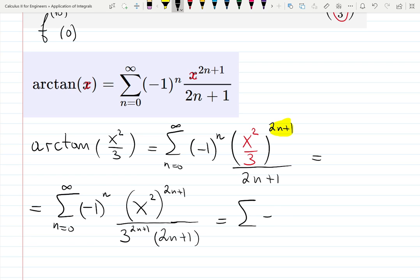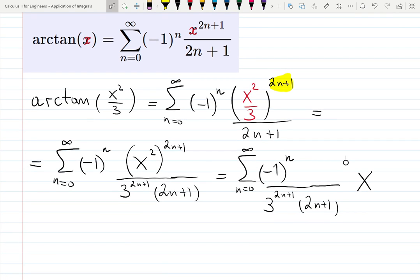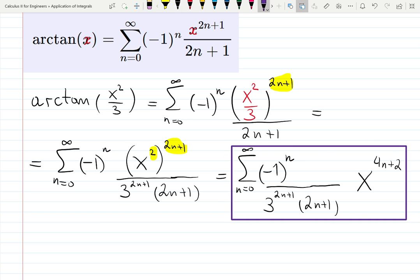Finally, merge those two exponents. Negative 1 to the n. n is from 0 to infinity. I will write down coefficients separately and x separately. I will write down over 3 to the 2n plus 1 times 2n plus 1. Those are constants or coefficients. And then x is proudly standing by itself raised to the what? 2 times 2n plus 1. That's going to be 4n plus 2. I'm multiplying those two exponents based on the properties of the exponents. And that is my intermediate answer. Right now I found the series for the arctangent I was provided using the formula.